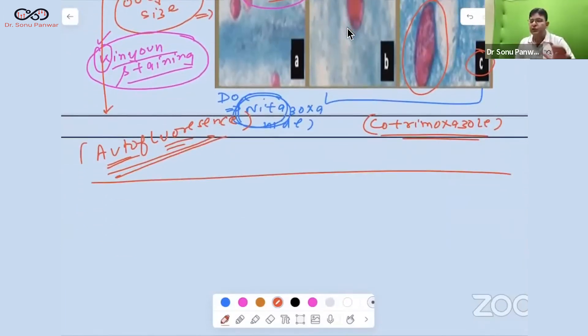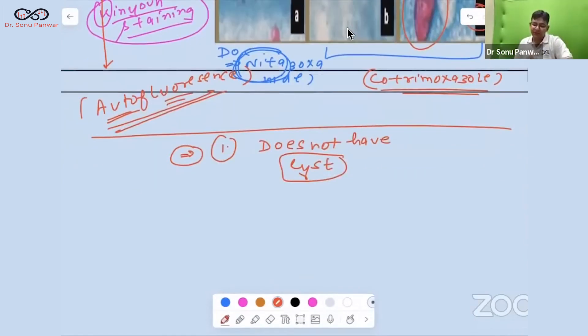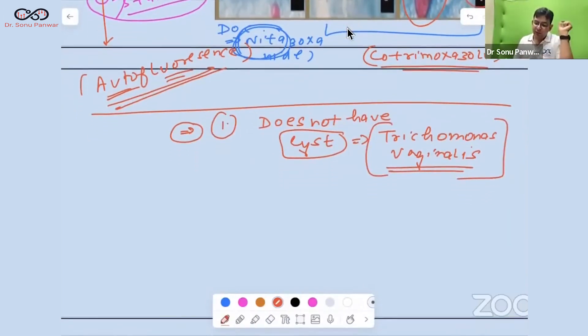Let me ask you some questions regarding protozoa now in a quick fix. Can you tell me an organism in the protozoa which does not have a cyst? Which does not have a cyst? So answer is Trichomonas. Trichomonas vaginalis is there which is not having any cyst. Not Toxoplasma. It is Trichomonas vaginalis which does not have a cyst.